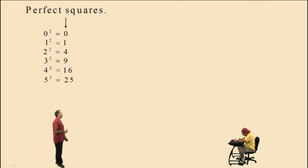25 is a perfect square because 5 squared is 25. 36 is a perfect square because 6 squared is 36. There's obviously a lot of other perfect squares.